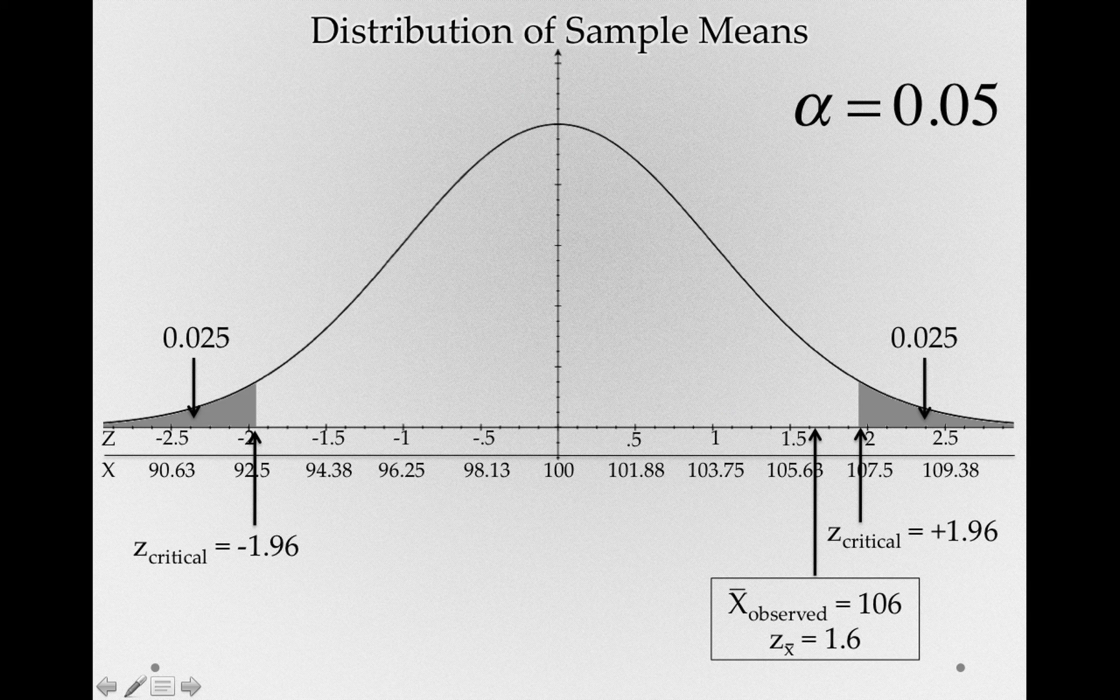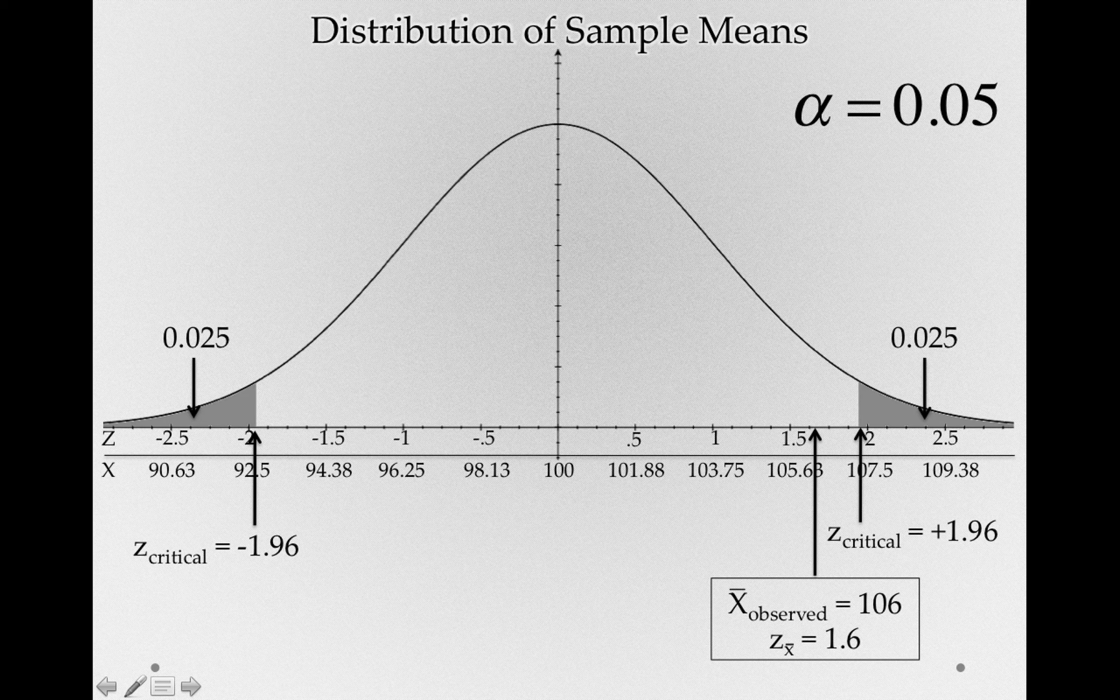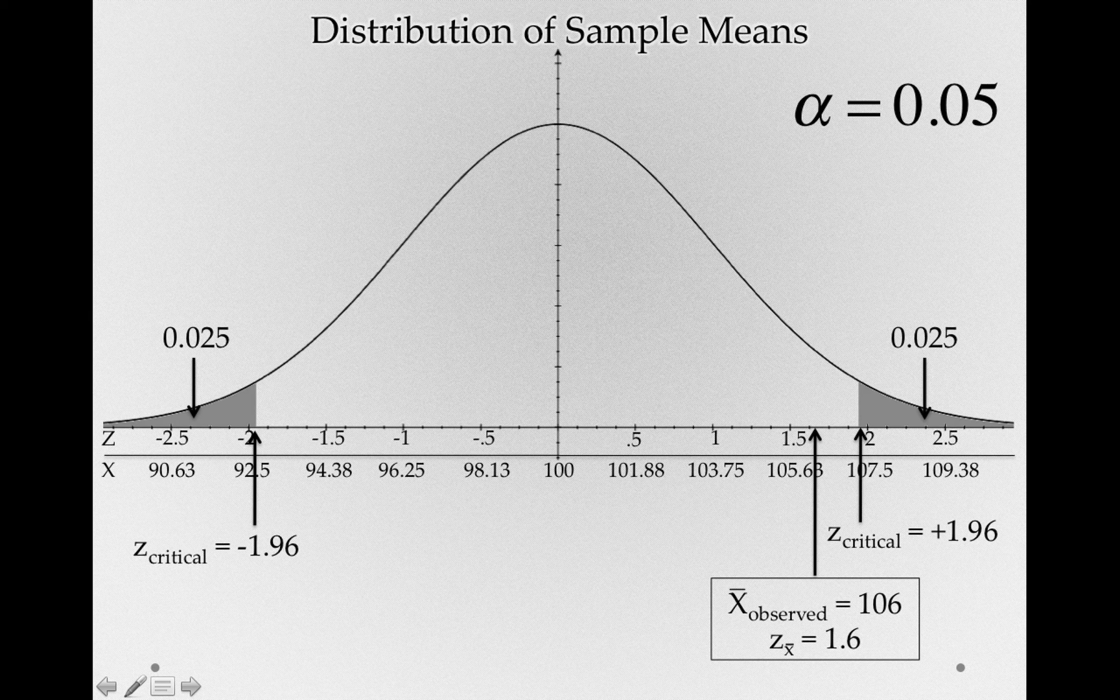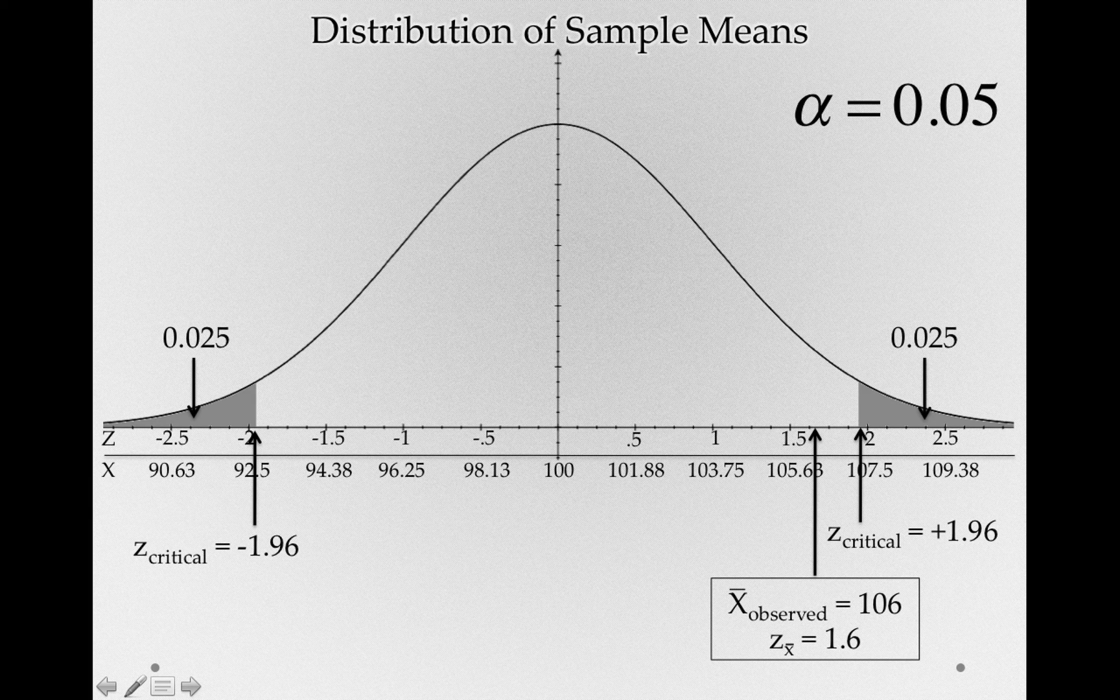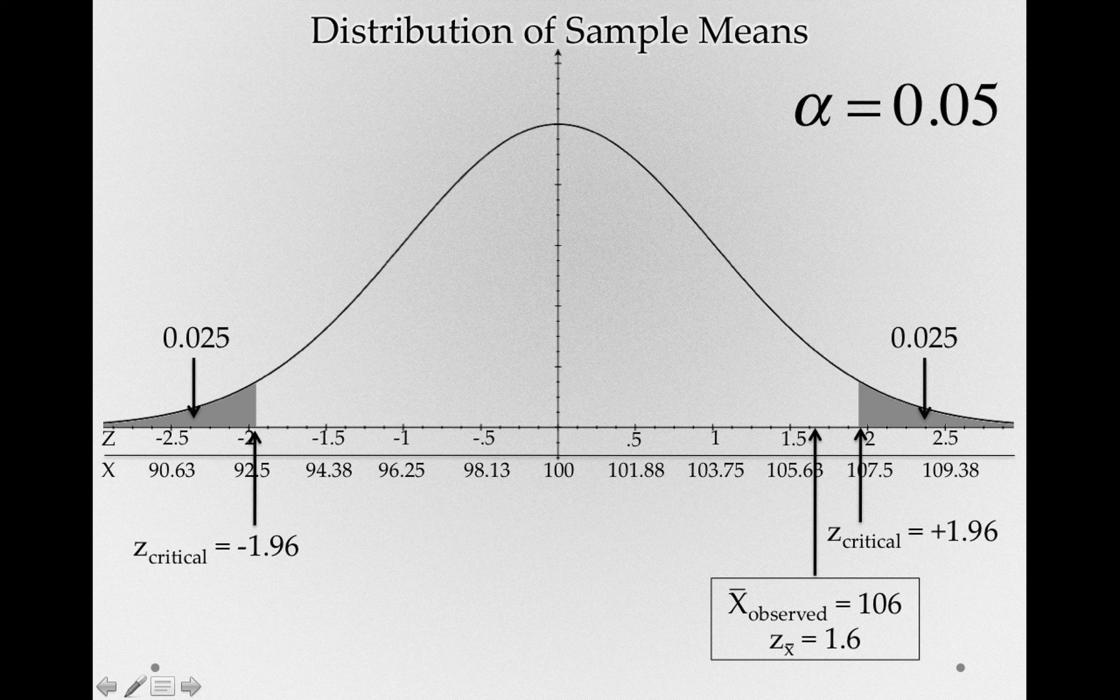Now in this case, if I were to ask you what the p-value is for our z sub x-bar, for that z sub x-bar of 1.6, and I wanted to know what the two-tailed p-value is, do you think our two-tailed p-value is more or less than our alpha level? Our alpha level is 0.05, so numerically, is our p-value greater than 0.05, or is our p-value less than 0.05?